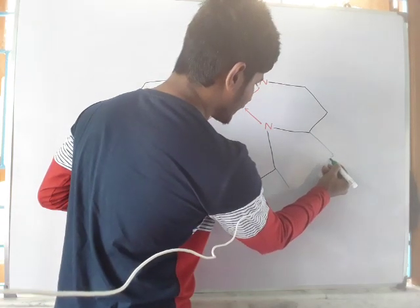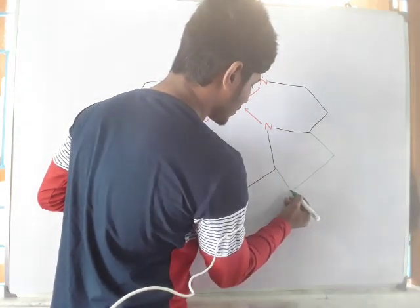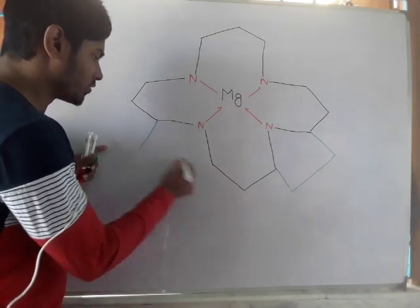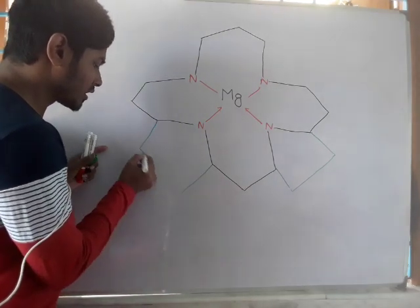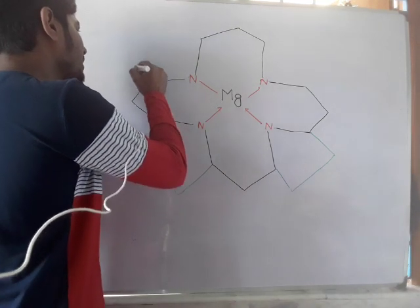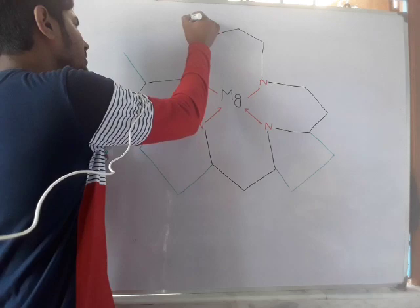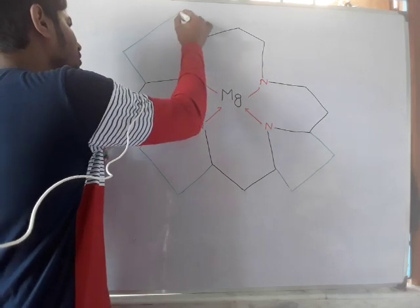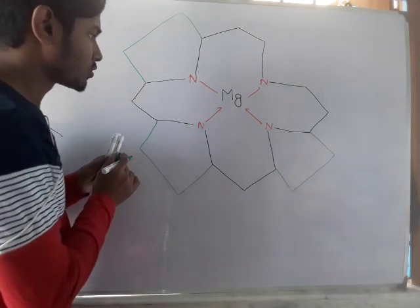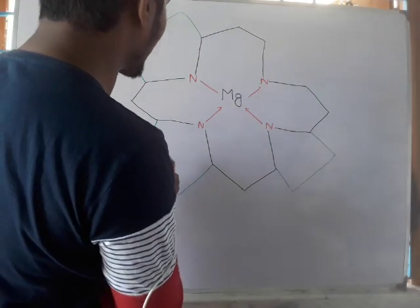After that, draw the pyrrole ring structure. It has four pyrrole rings, for which we call it the tetrapyrrole ring structure, and it is also called the porphyrin structure.